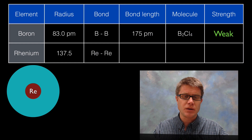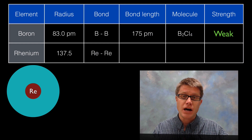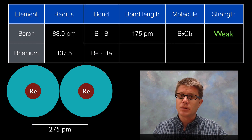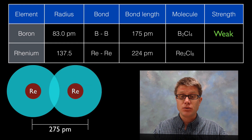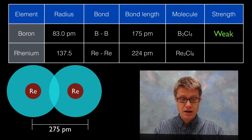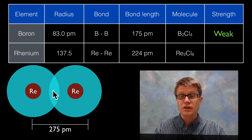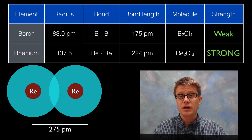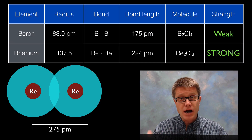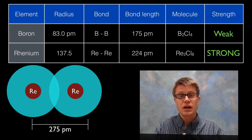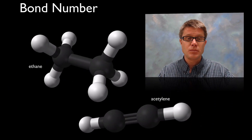Using another example — rhenium, which has a radius of 137.5 picometers — if we had two rhenium atoms we'd expect a bond length of 275 picometers. If we actually measure it in a molecule and it's less than that, that means they're really overlapping, there are greater charges holding it together, and we'd call that a strong bond. Again, the higher the bond energy, the closer those atoms are going to be and the shorter that bond length is going to be.